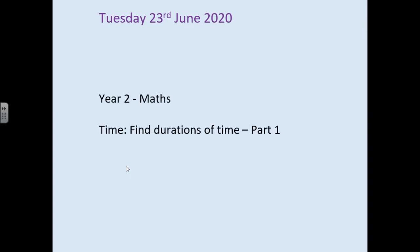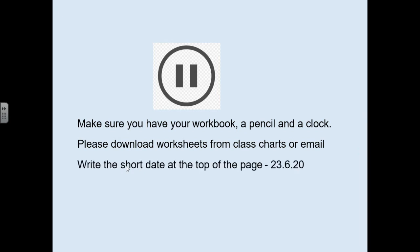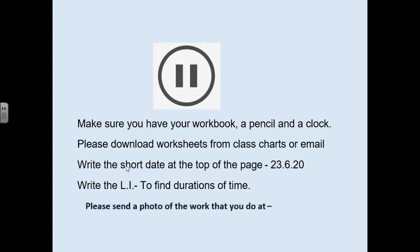Hi everyone, welcome back. It's Tuesday 23rd June 2020, Year Two maths. Today we're going to look at the first part of finding durations of time. Pause the video and please make sure you have your workbook, a pencil and a clock. Please download the worksheets from Class Charts or email. Write the short date at the top of the page: 23.6.20. Write the LI: to find durations of time.